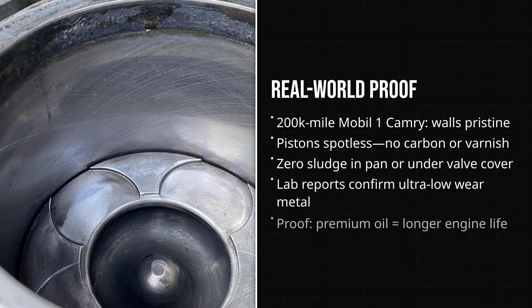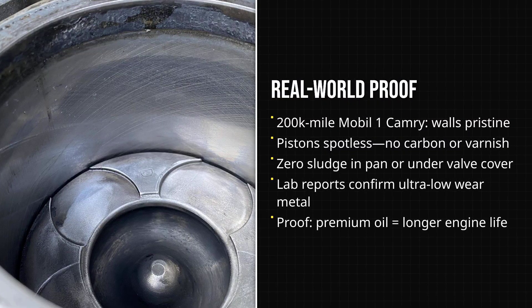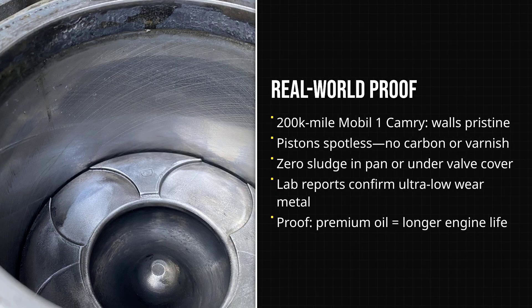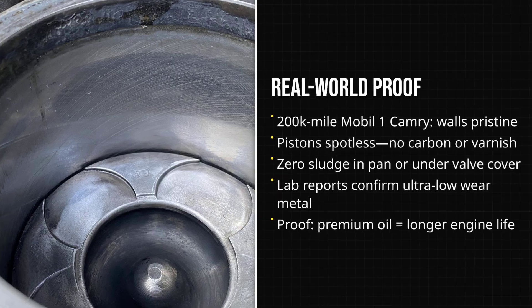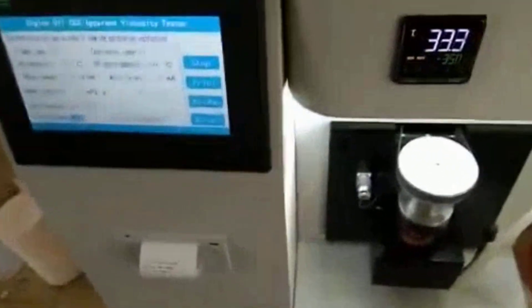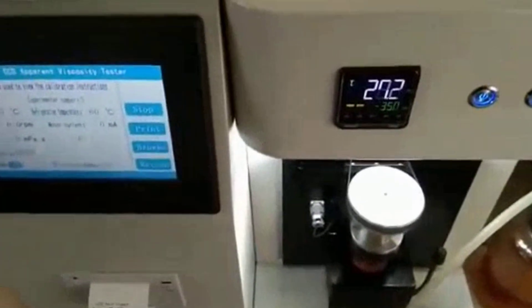Take the Toyota Camry case. After two decades and over 200,000 miles on Mobil 1, the cylinder walls are free of scoring, the pistons are clean, and there is no trace of sludge hiding in the oil pan or under the valve cover.